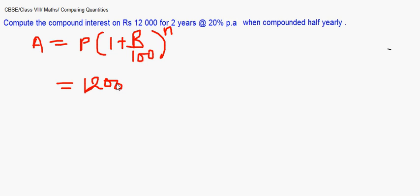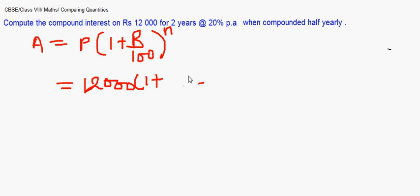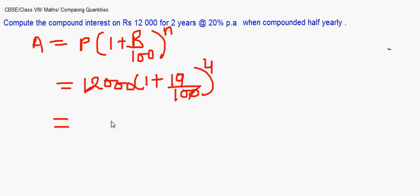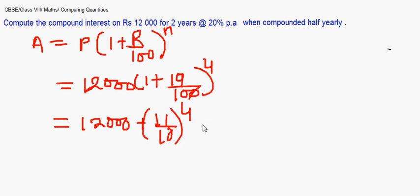So it is 12,000 into (1 + ...). Now this 20 percent is per annum, so for six months the rate becomes 10 percent. You will not write 20 there — you write 10, because 20 is per annum for one year. This 10 percent rate is given four times. If you reduce it, 10/100 becomes 1/10, so 1 plus 1/10 is 11/10 to the power 4.